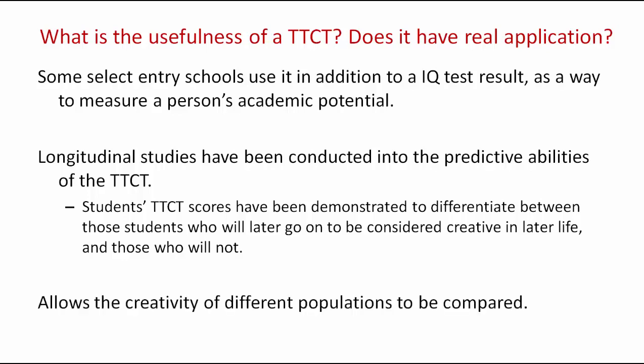As previously mentioned, the test also allows the creativity of different populations to be compared. For example, one study found that American college students scored significantly higher than Japanese college students on the Torrance Test of Creative Thinking. Therefore, it may be considered that the creativity level of American college students may be higher than that of Japanese college students. However, it is also important to bear in mind that the Torrance Test of Creative Thinking may not be equally applicable to people from different cultural backgrounds.